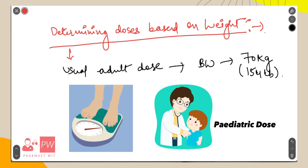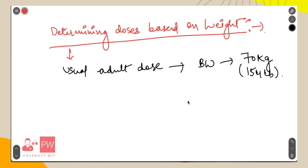Also, body weight is used to determine pediatric doses because age may not be a reliable indicator of body composition or function in children. When drugs are intended to be dosed based upon body weight, the dose will be expressed as a quantity of drug per kilogram of body weight.